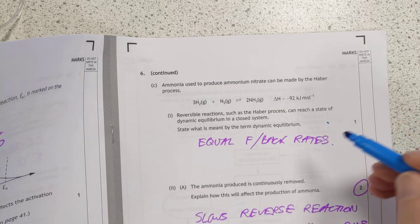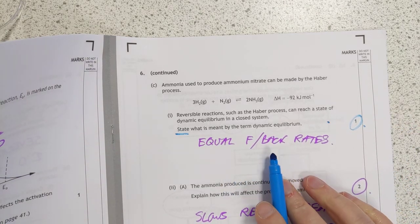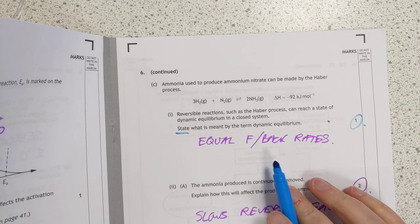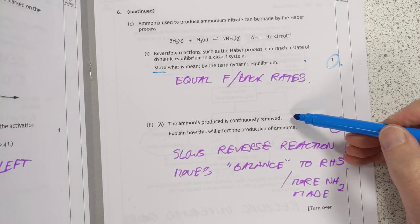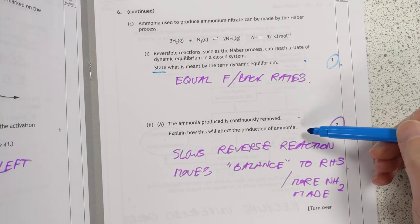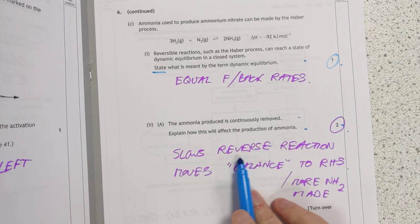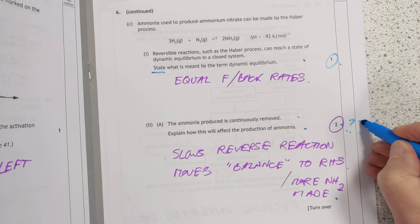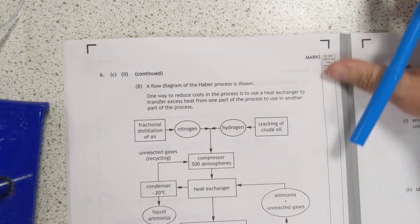Dynamic equilibrium. Quite a few states. They just want definitions. Fair enough. It's only worth one mark. That's when the forward and backward reaction rates are equal to each other. Or they might accept when the concentrations no longer change. I'm not sure what they're looking for on that one. The ammonia production is continuously removed. Explain how this affects the production of ammonia for two marks. It will slow down the reverse reaction. It will move the balance to the right-hand side. So in other words you may end up making more ammonia. But I don't know how they're going to distribute these marks there.